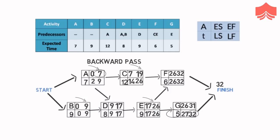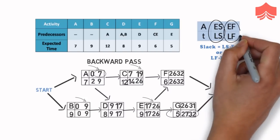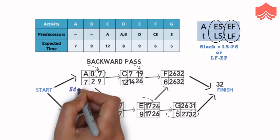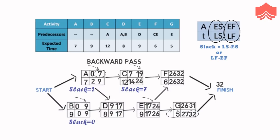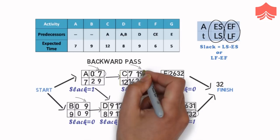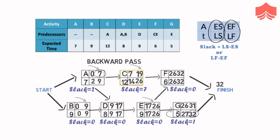Now let us calculate the slack for each activity. Slack is the delay which we can allow in an activity such that it does not cause any delays in the deadline of a project. The formula for calculating slack is LS minus ES, or LF minus EF. So for A it can be 2 minus 0, or 9 minus 7, which is 2. For B it will be 0, 7 for C, for D, E and F it will be 0 again, and for G it will be 1. The slack of 7 days in C shows that it can be delayed for 7 days without causing any delay in the project. C can begin any time between day 7 and day 14, and it can end at any time between day 19 and 26.